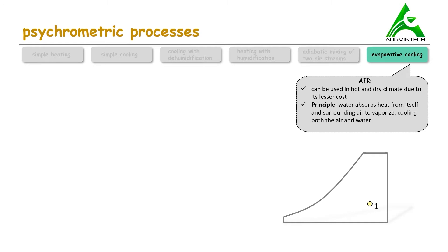In the initial stage, air is at state 1. After getting evaporative cooled, the final state is obtained as state 2. So this is the state 1 of air.